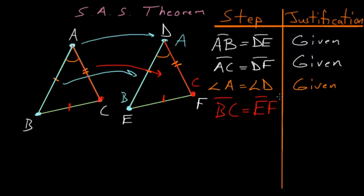And this comes from common notion number four, which says that things which coincide with each other are equal to each other.